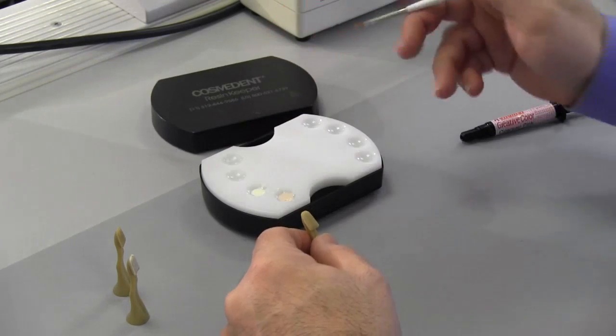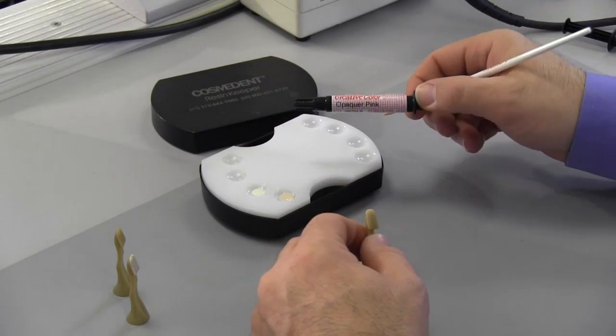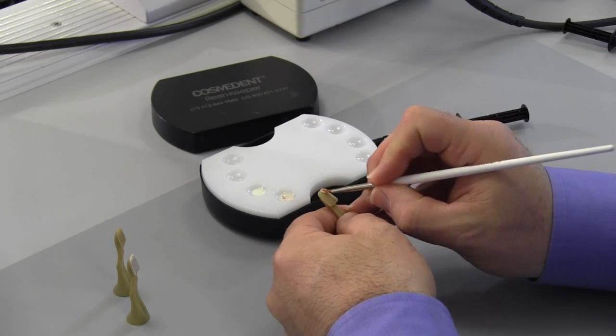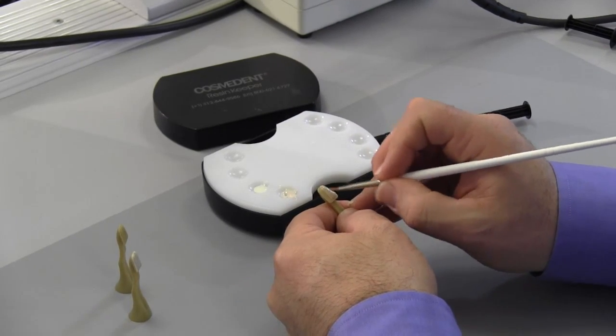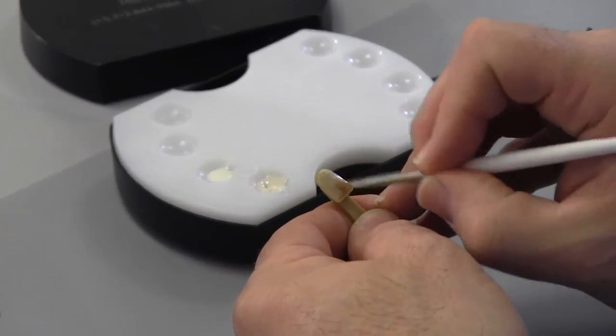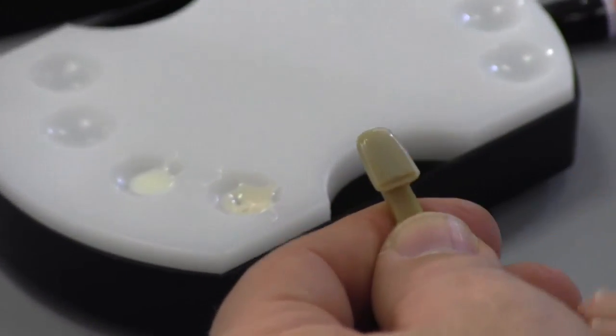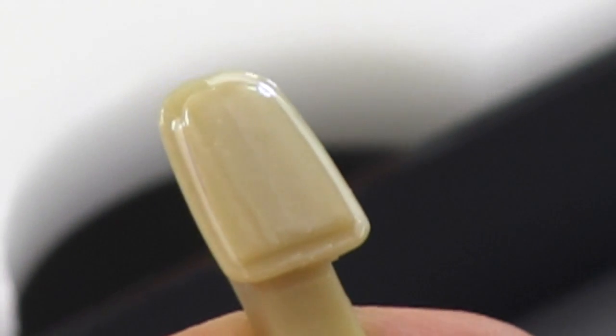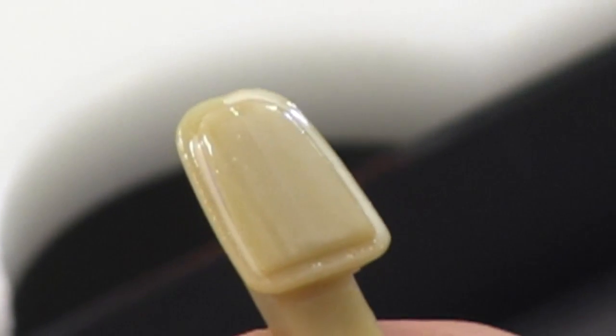Next we're going to apply the Creative Color Pink Opaque. You can see you want to put that on in a nice, even coat. Thinner the better to start. You can see this thin coat just lightly starts to change the color of that tooth without bringing the value up too much. It keeps it warm. Then we polymerize this for 10 seconds.